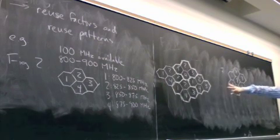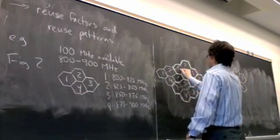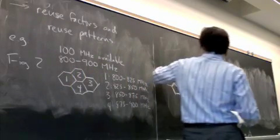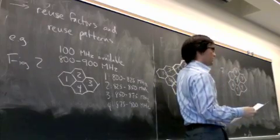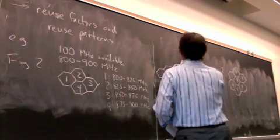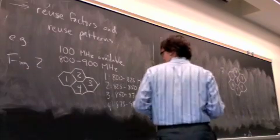So what we see over here with four, there is a certain minimum spacing, guaranteed minimum spacing, among cells that have the same frequency. So all these cells marked one are using the same bandwidth, 800 to 825 megahertz. All the cells marked two are using the same bandwidth, 825 to 850 megahertz.